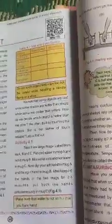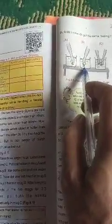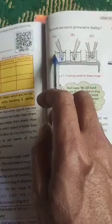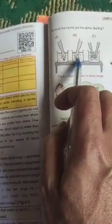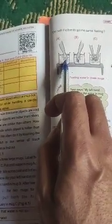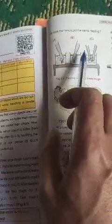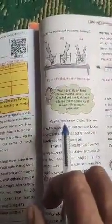Take three mugs - A, B, and C. Fill one mug with cold water, one with hot water, and one with warm water. Put your left hand in the cold water and your right hand in the hot water. After some time, put both hands in the warm water in the middle mug.